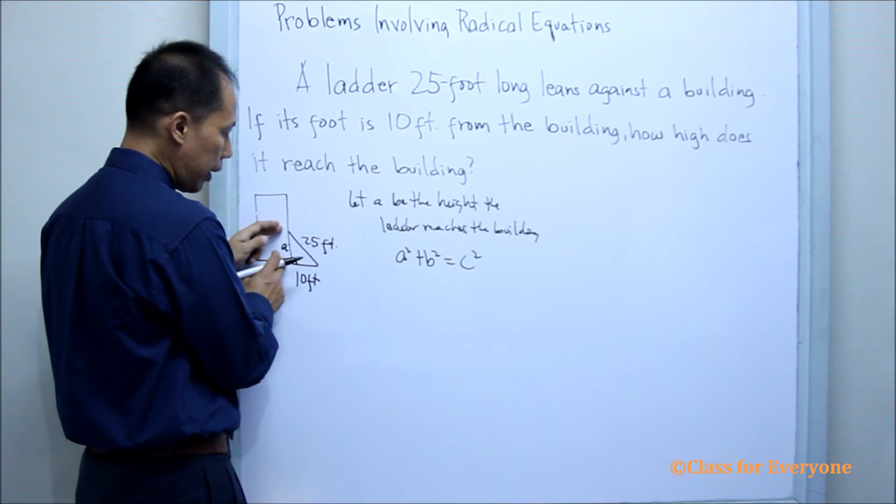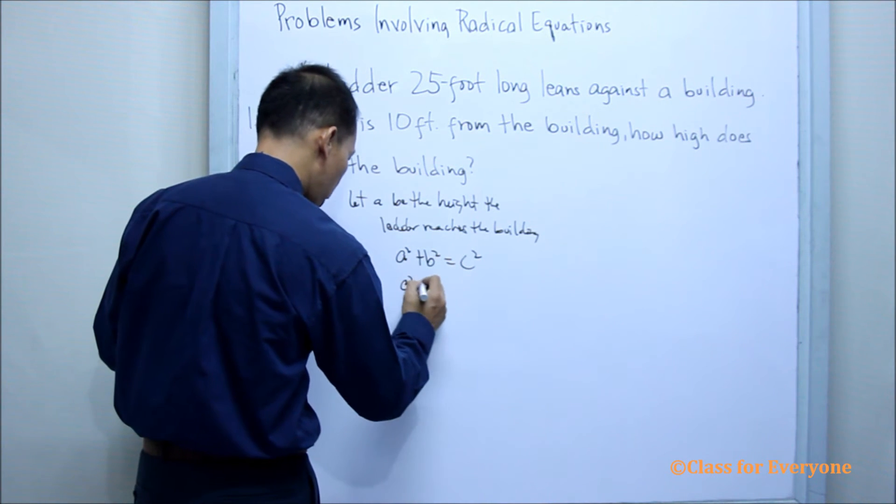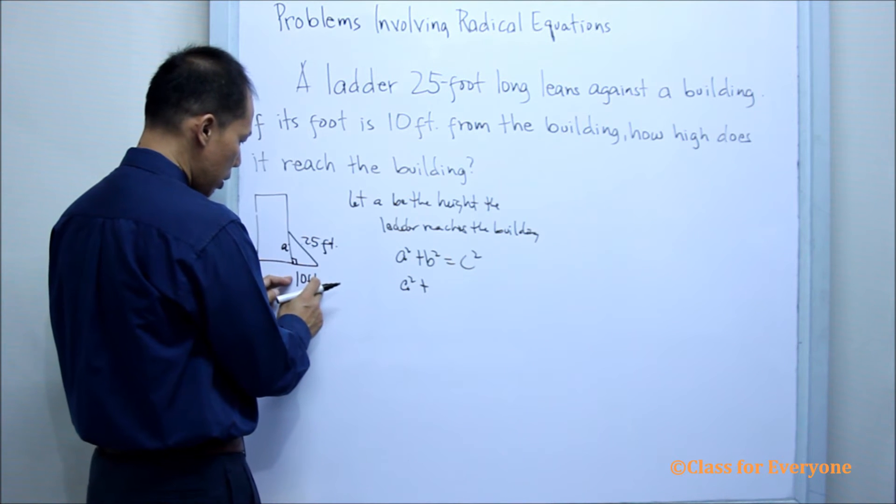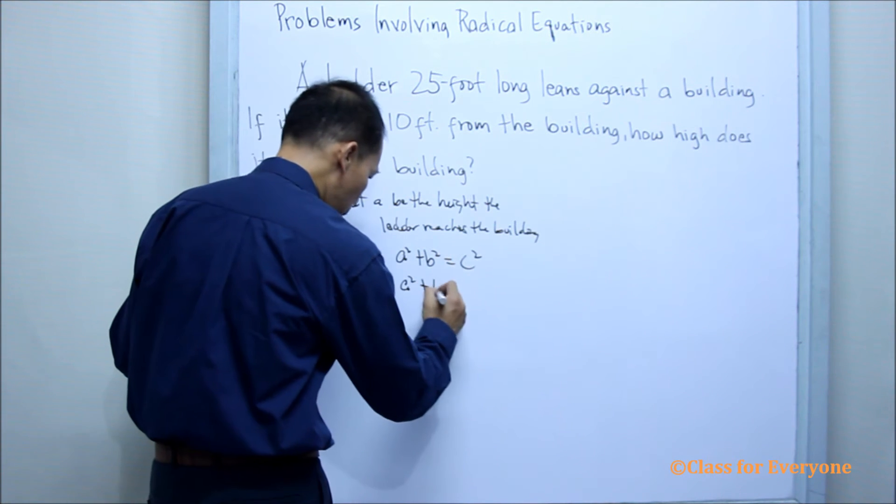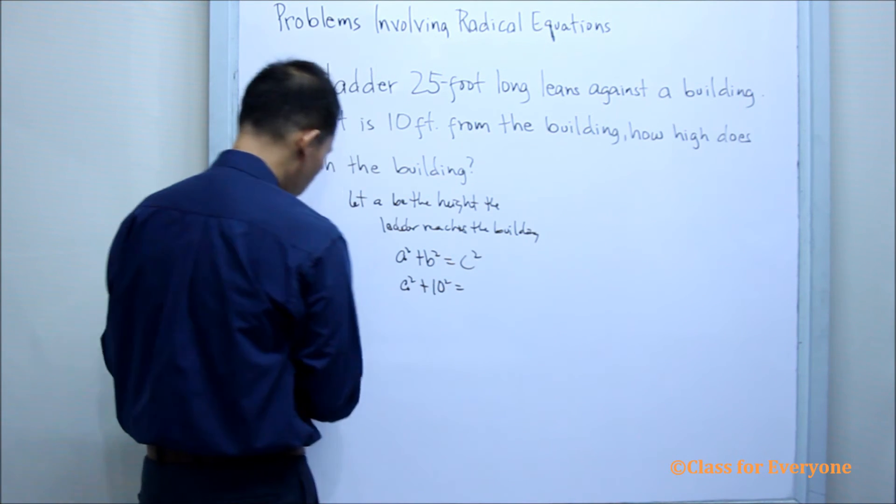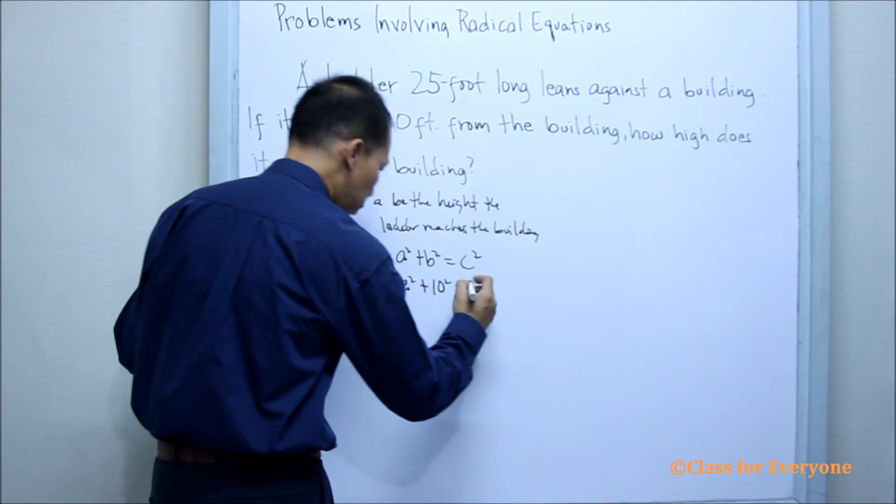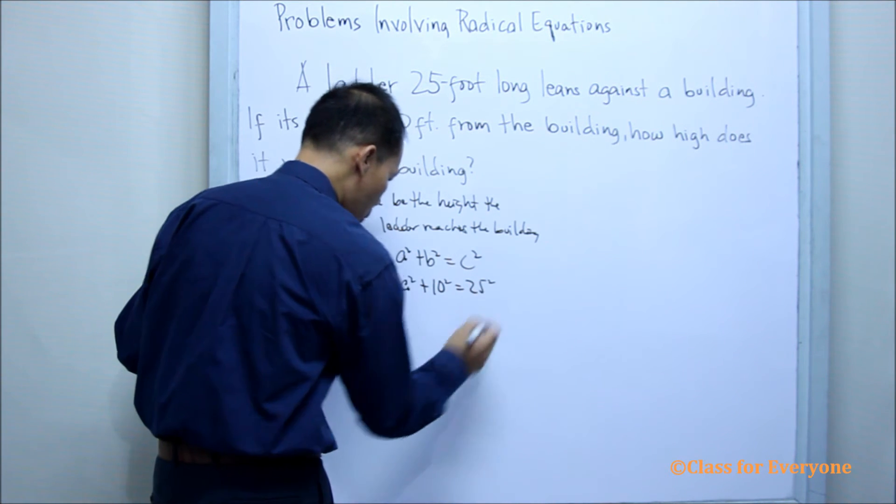Our A is the height, that is what we are looking for. B is the base. The base is 10 foot, so we will square 10. And then we are going to square also the hypotenuse, which is 25 squared.